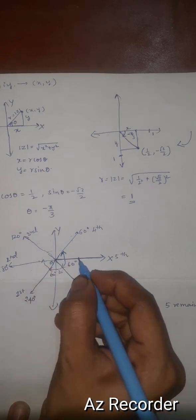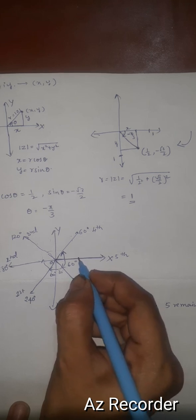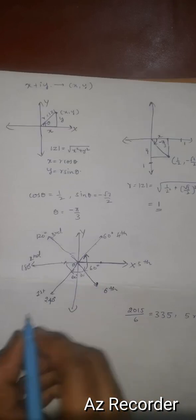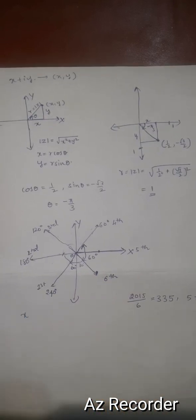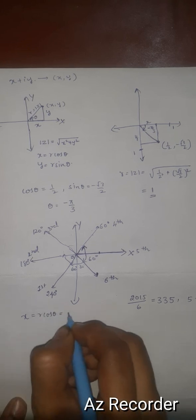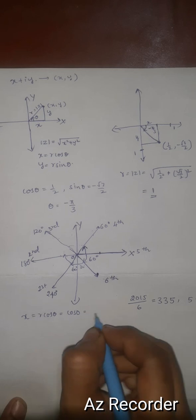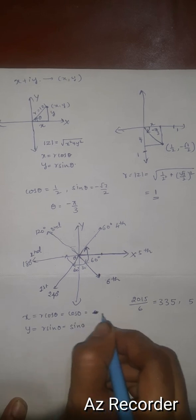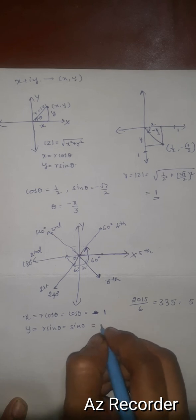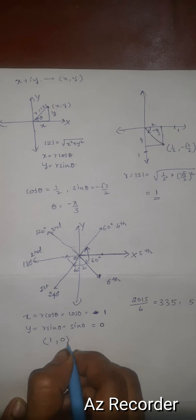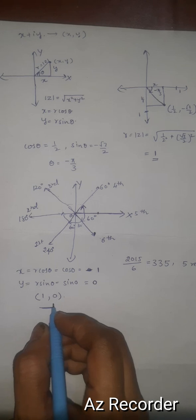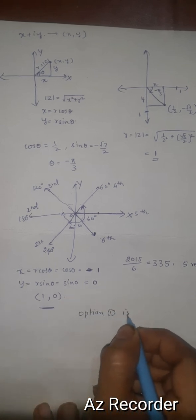After 5 rotations the point will be at θ = 0 degrees, which is on the positive x-axis. Here R = 1 and θ = 0, so x = R cos θ = 1 × cos 0 = 1, and y = R sin θ = 1 × sin 0 = 0. So the point is (1, 0). Therefore, after 2015 rotations, the resulting position of the point in the plane is (1, 0), so option 1 is correct.